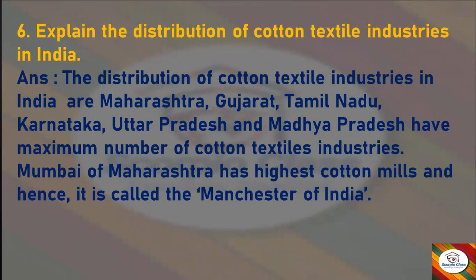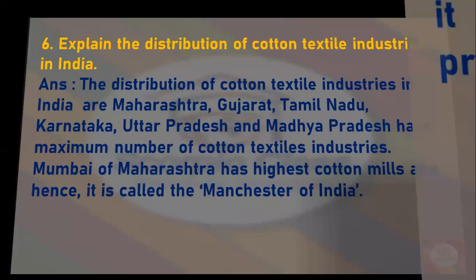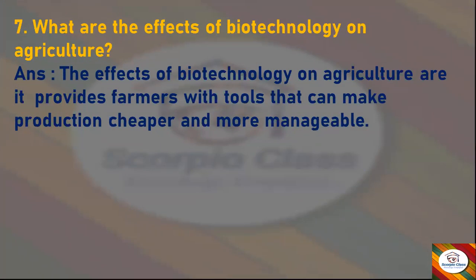Next question: Explain the distribution of cotton textile industries in India. Answer: The distribution of cotton textile industries in India includes Maharashtra, Gujarat, Tamil Nadu, Karnataka, Uttar Pradesh, and Madhya Pradesh, which have the maximum number of cotton textile industries. Mumbai in Maharashtra has the highest number of cotton mills and hence it is called the Manchester of India.